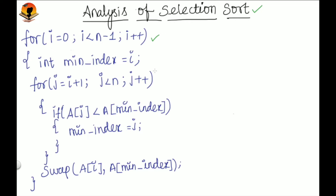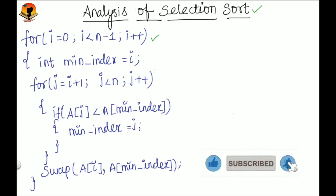We'll also see how to find out the space complexity. Now you may have a question: why am I taking this selection sort program for analysis instead of counting the number of comparisons or number of swaps? If you analyze it that way, you will get a lot of confusion about why only the number of comparisons are considered and why the number of swaps are not. So to avoid those kinds of confusions, I am going to take this program for analysis.